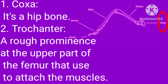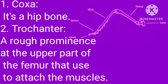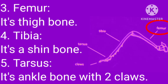Coxa is the hip bone. Trochanter is a rough prominence on the upper part of the femur, serving for the attachment of muscles. Femur is the thigh bone. Tibia is the shin bone. Tarsus is the ankle bone with two claws.